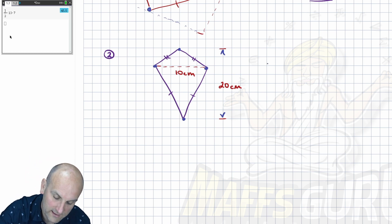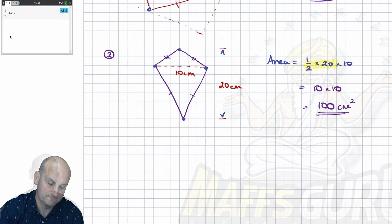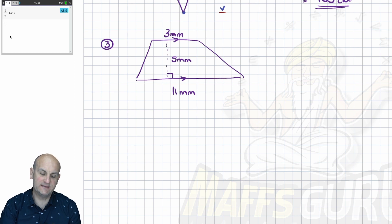I've got what I need. So I now know that my area of this is going to be a half times 20 times 10. Again, I know what a half of 20 is. It is 10 times 10, which gives me 100. And don't forget the units, centimeters squared.